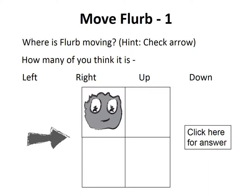We have placed Fleur in one of these four boxes. On this slide, we have placed Fleur on the top left corner box. Now, look at this arrow. If Fleur has to move, looking at this arrow, where do you think Fleur will move? Do you think Fleur will move left or right or up or down?